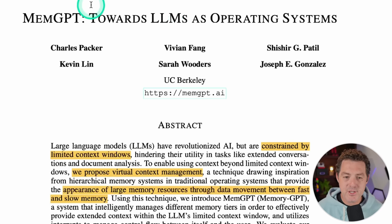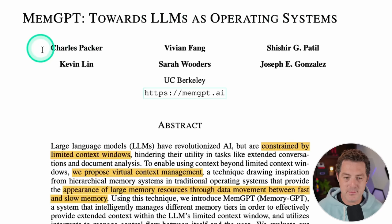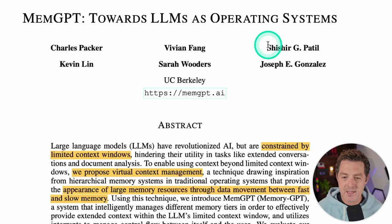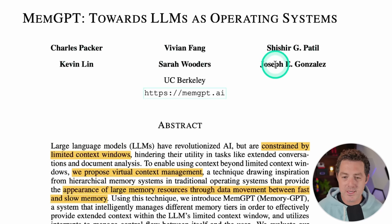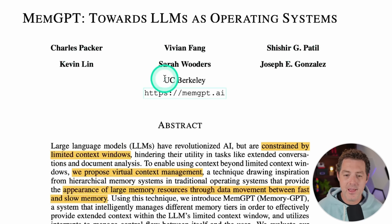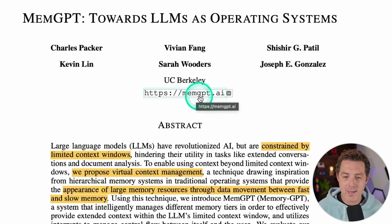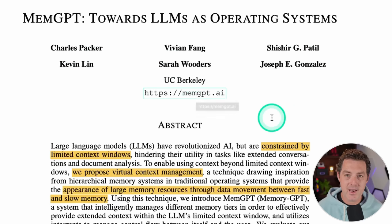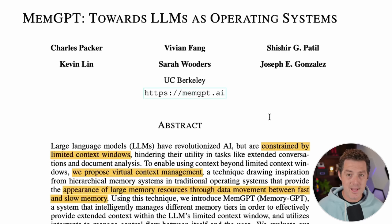This is the paper: MemGPT — Towards LLMs as Operating Systems. The main author is Charles Packer, with Vivian Fang, Shashir Patil, Kevin Lin, Sarah Wooders, and Joseph Gonzalez as contributing authors. This is out of UC Berkeley. You can find the website at memgpt.ai, which includes the code, the research paper, the datasets they used, and other things.